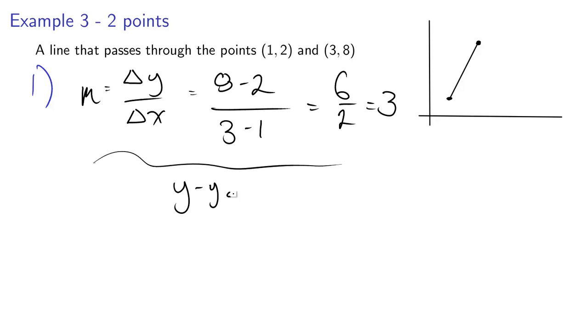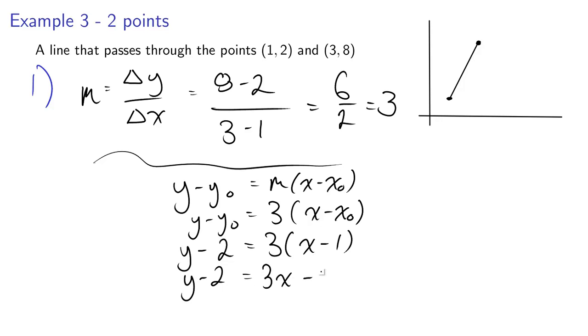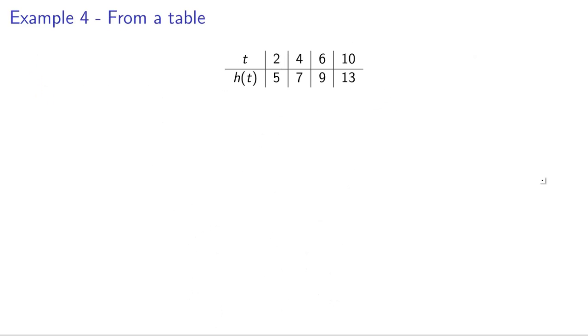Now if we come to y - y₀ = m(x - x₀), plug in our m, we still need to figure out what the point on the line is. Now we have two to choose from. Which do we pick? The answer is we can pick either. I'm just going to pick (1, 2) here. Doing the same algebra: y - 2 = 3x - 3. We're going to add 2 to each side and get 3x - 1.